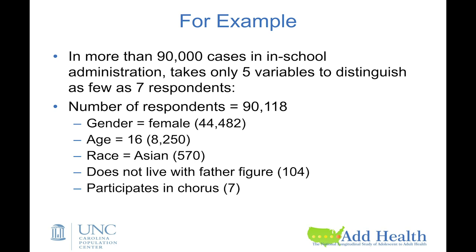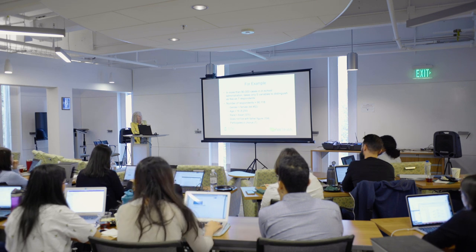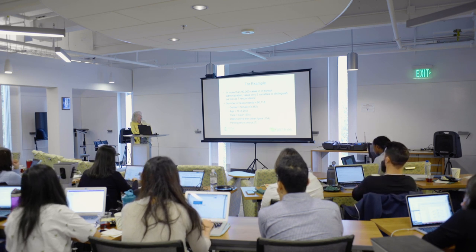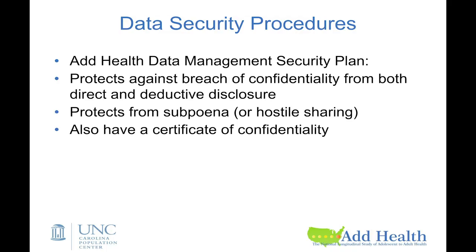Here's an example that made us more and more nervous. We have about 90,000 cases from the in-school administration. It only takes five variables to distinguish as few as seven respondents. For example: female, age 18, Asian, does not live with a father figure, participates in chorus. You can imagine how easy it would be to add one more variable — 'does not speak English at home' — to come up with one person.